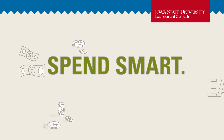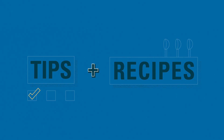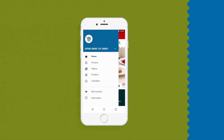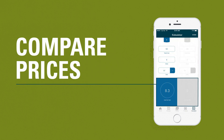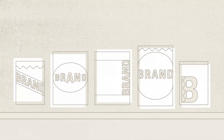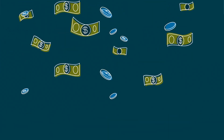We named it SpendSmart, EatSmart for a reason. We offer nutrition tips and recipes that'll make your taste buds and wallets smile. Use our app's unit price calculator to compare prices between similar products with different sizes, different forms, and different brands, so you can get more for your money at the grocery store.